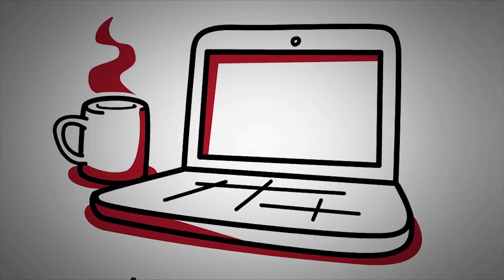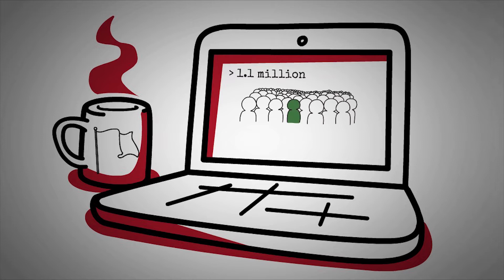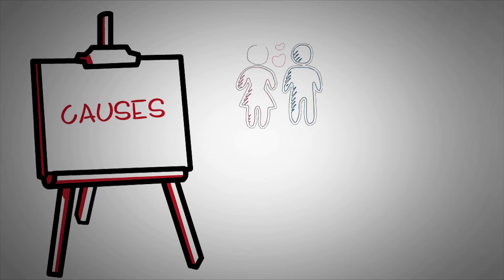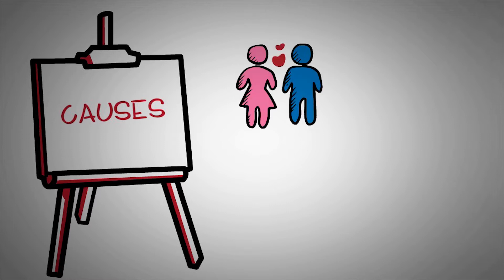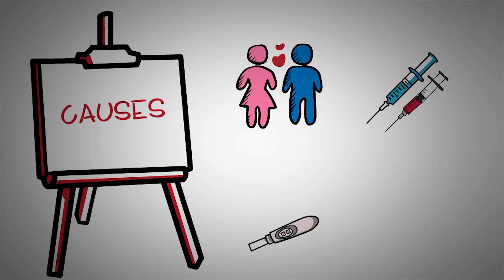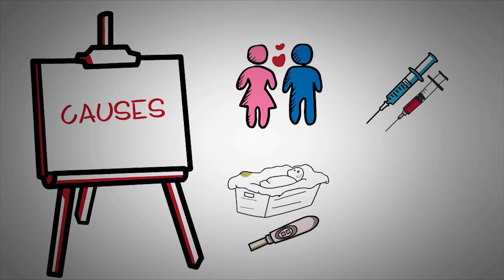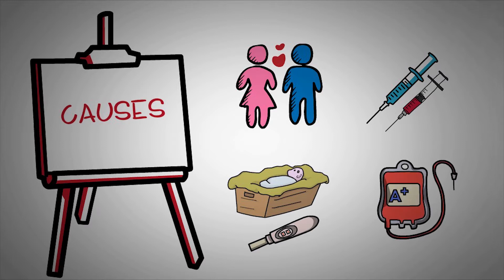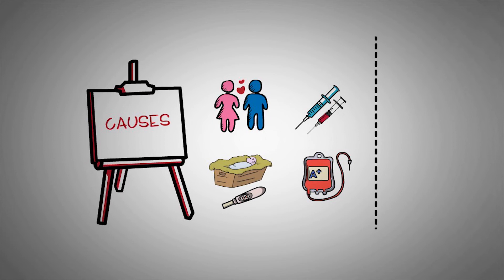In 2018, more than 1.1 million people were living with HIV in the United States, and 6,000 deaths were related to AIDS. One of the main causes of HIV transmission is anal or vaginal intercourse without using barrier protection or without taking pre-exposure prophylaxis. Another main cause is sharing equipment for injecting drugs. Less commonly, HIV transmits to babies during pregnancy, childbirth, or breastfeeding. There is also a chance of transmission via blood transfusions, though the risk is extremely low when blood donations are effectively screened.